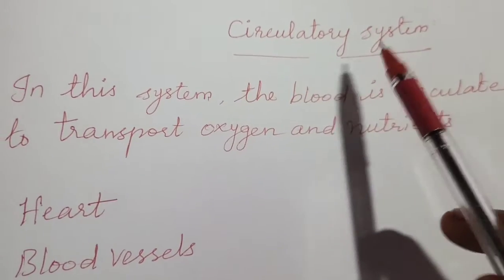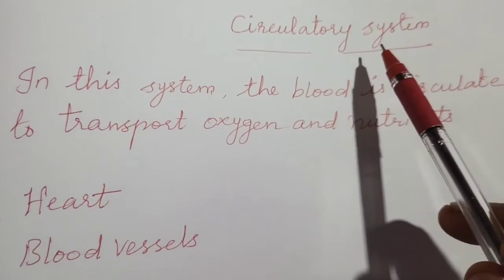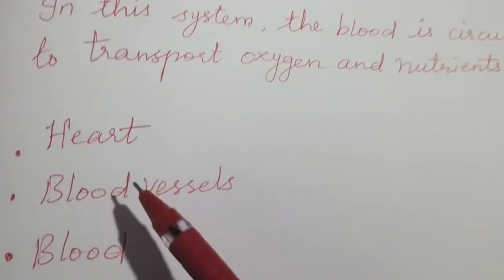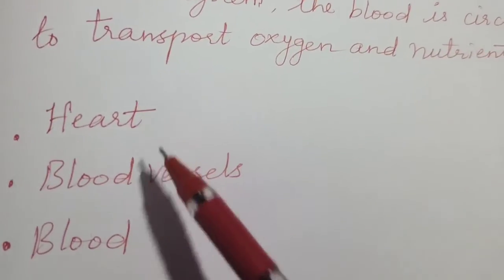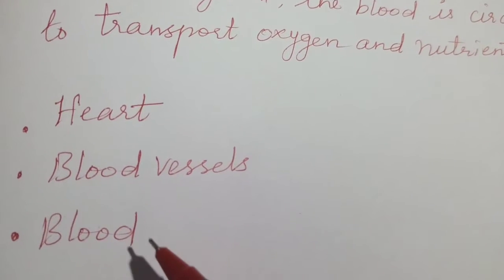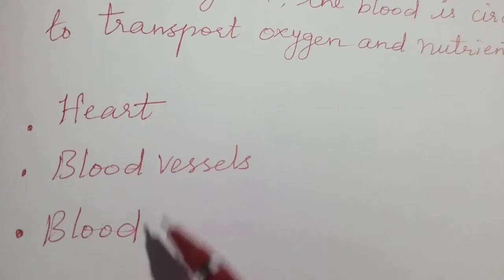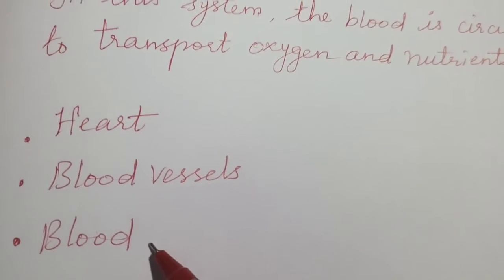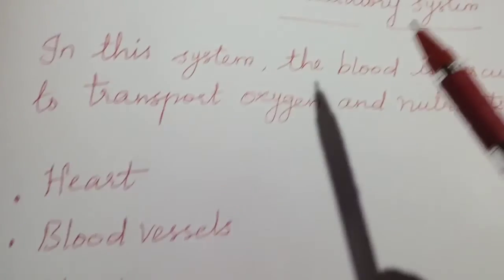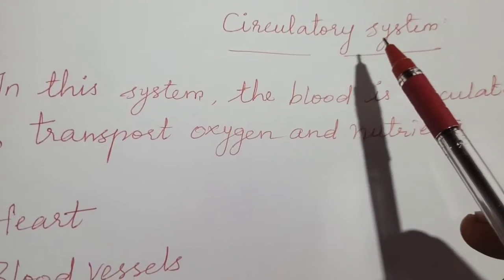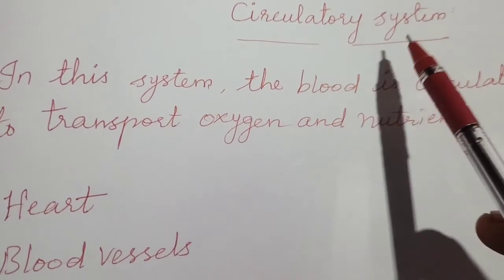The circulatory system consists of many organs such as heart, blood vessels, and blood. These are the organs that supply the blood to the body, which is why this system is called the circulatory system.